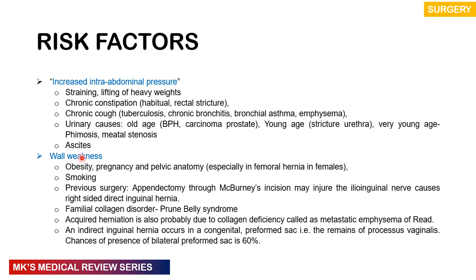Weakness may be associated with obesity, pregnancy, and pelvic anatomy — especially with femoral hernias in females. There may also be smoking, previous surgery such as appendectomy through McBurney's incision that may injure the ilio-inguinal nerve causing right-sided direct inguinal hernias, and familial collagen disorders such as prune belly syndrome. Acquired herniation is probably due to collagen deficiency, referred to as metastatic emphysema of Reed. An indirect inguinal hernia can occur in a congenital preformed sac — for example, remains of a processus vaginalis — and the chances of it being bilateral is about 60%.